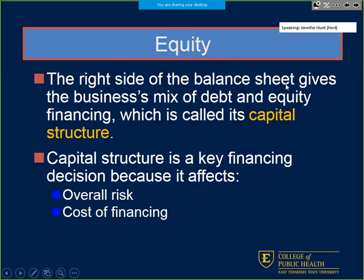The bottom or right side of the balance sheet gives us a mix of our debt financing and equity financing — we call this our capital structure. It's key because it affects our overall risk in terms of what rating or interest rate we get on loans, and how we're handled by a bank giving us a loan, in terms of cost of financing.